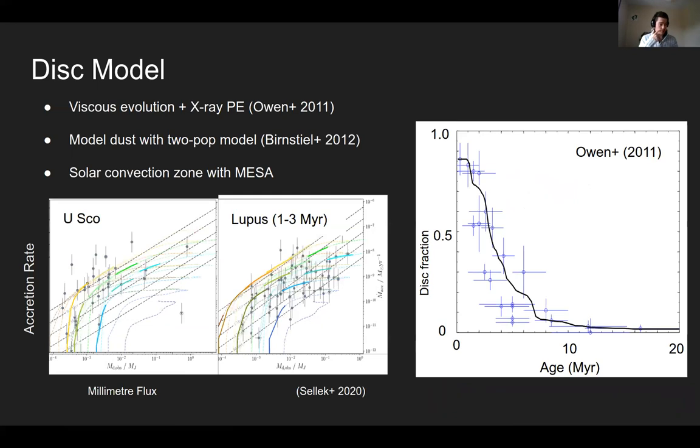So to test this, what we've done is we've taken our model of protoplanetary disks, which is a viscous model plus photoevaporation to do disk dispersal. On top of that, we've added standard treatment of dust evolution from the two population model of Birnstiel. These models do a pretty good job of explaining, for example, the fraction of disks of different fluxes in clusters of different ages. James Owen showed that in 2011. And recently, with Andrew Sellek, we showed that they actually do a reasonable good job of matching the millimeter fluxes and accretion rates of disks in regions of different ages.